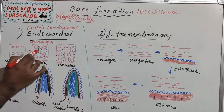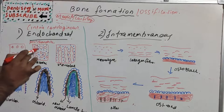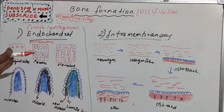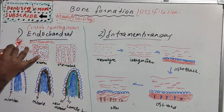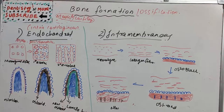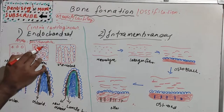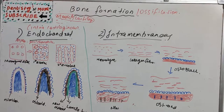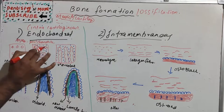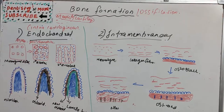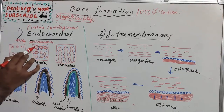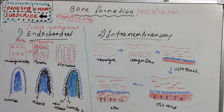The intercellular substance surrounding the cartilage becomes calcified due to the enzyme alkaline phosphatase, which is secreted by the cartilage cells. This calcification of intercellular substances cuts off the nutrition to the cartilage cells, leading to their death, because all the surrounding areas are calcified. The death of these cells results in the formation of empty spaces known as primary areolae.